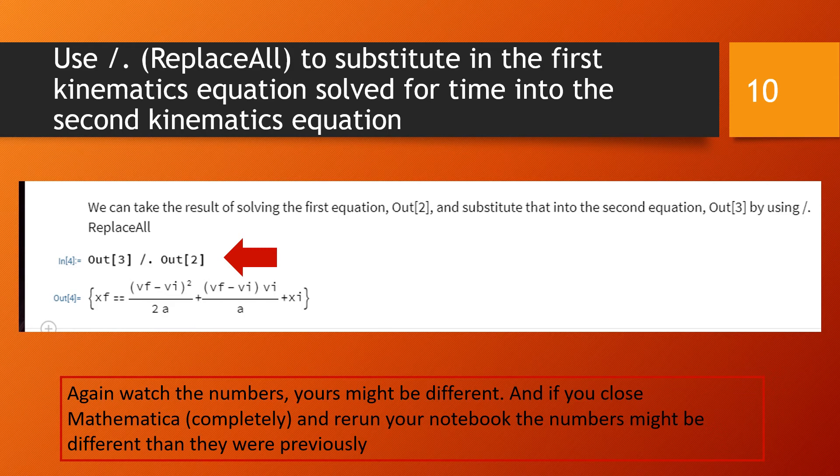Shift enter and that gives you the result found in Out[4]. Again always watch your numbers, Out[3] for me was the second kinematic equation, Out[2] was the solution to the first kinematic equation solved for time.